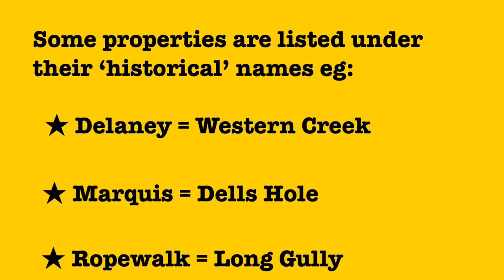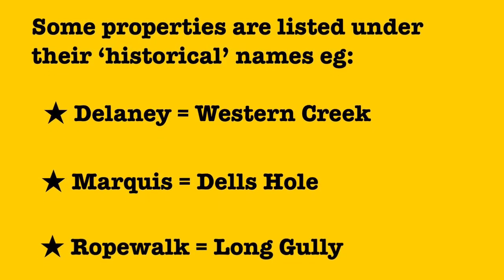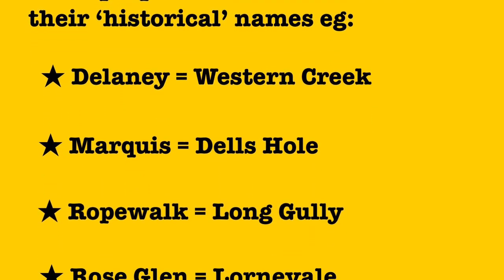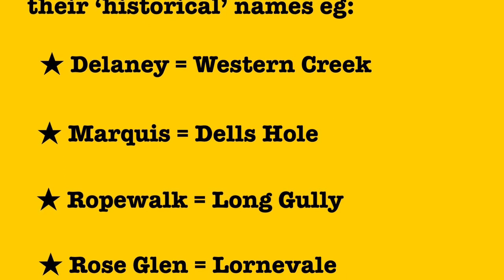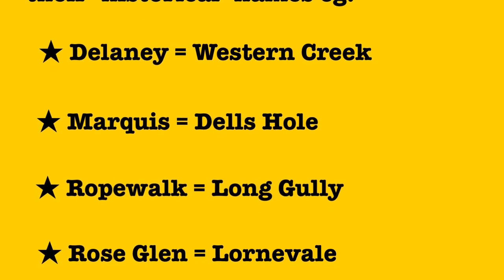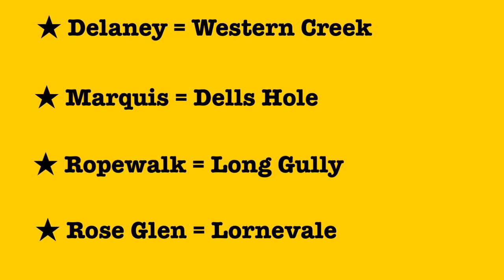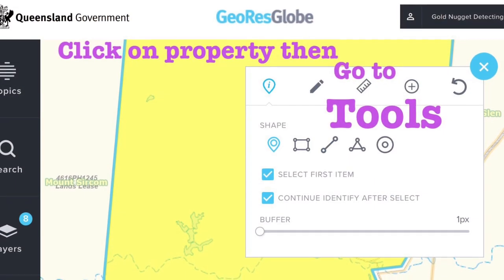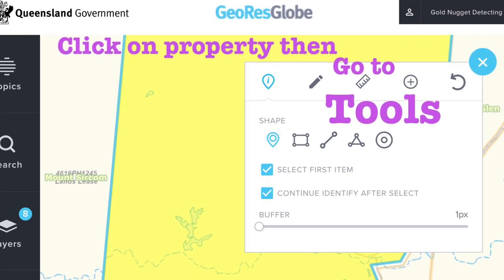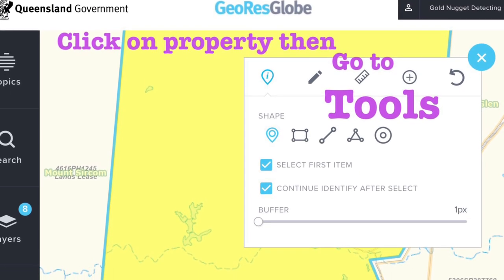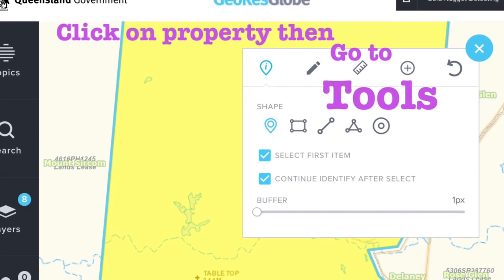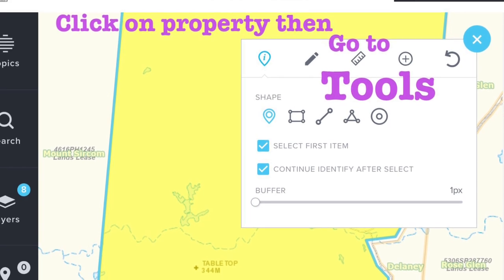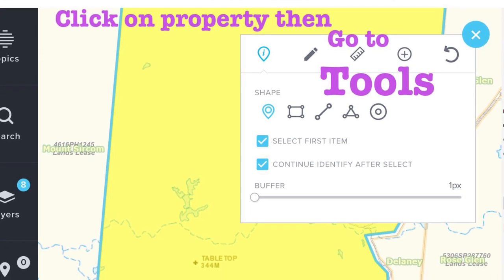The property names on the maps are historical names and some of those properties are now known with a more local name. In this example I'm looking for Western Creek, and under its old name of Delaney I've clicked on the map, which highlights it in yellow.